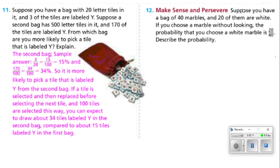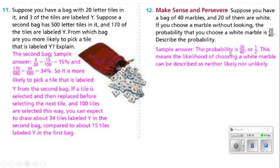Number 12: suppose you have a bag of 40 marbles and 20 of them are white. If you choose a marble without looking, the probability is 20 out of 40. That's 0.5, about a 50 percent chance — one half. The likelihood of choosing a white marble is neither likely nor unlikely, since it's a 50-50 chance. You have an equal chance of getting a white marble or one that is not white.